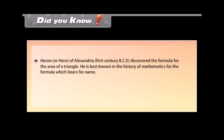Did you know? Heron, or Hero, of Alexandria, 1st century BCE, discovered the formula for the area of a triangle. He is best known in the history of mathematics for the formula which bears his name.